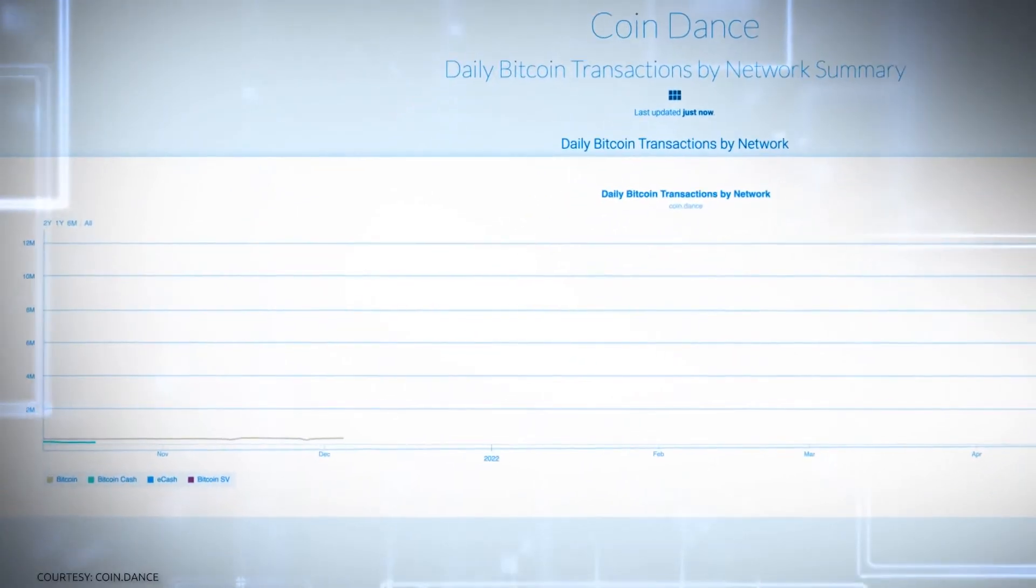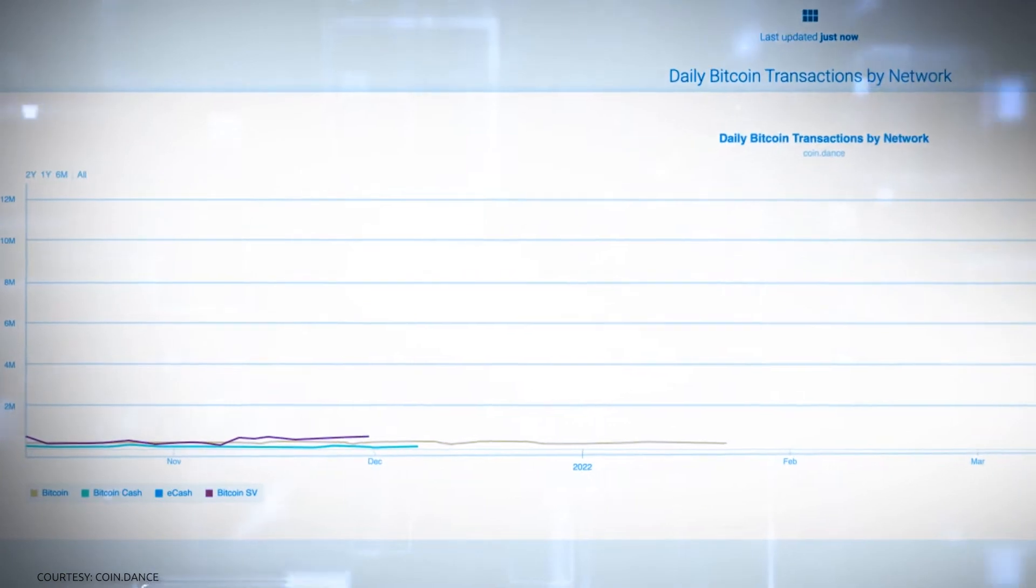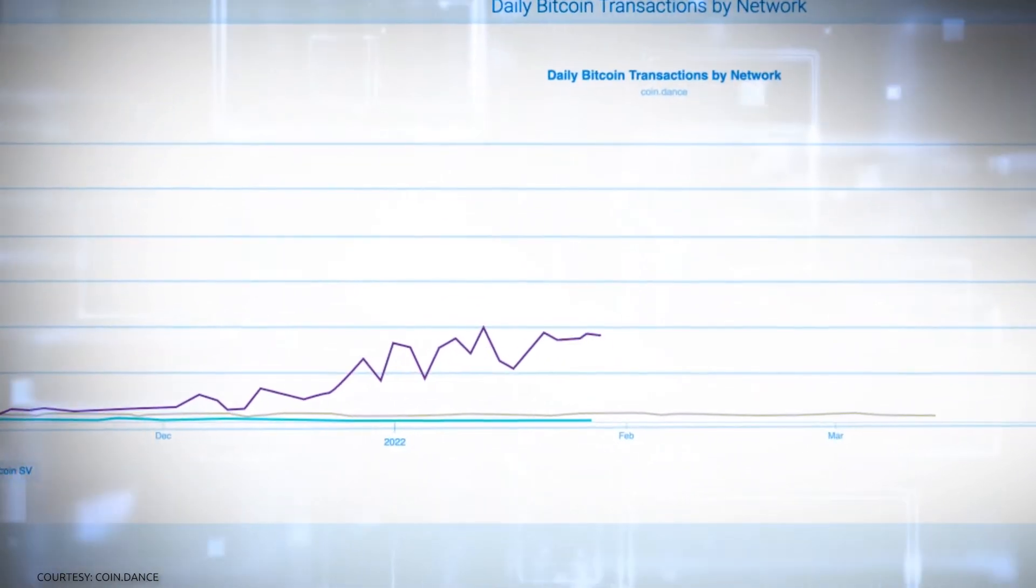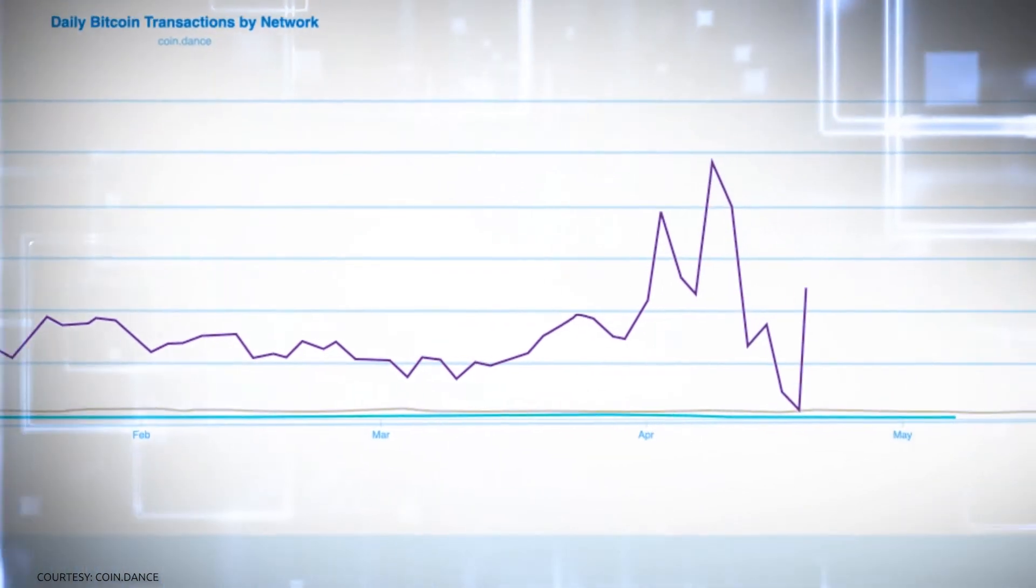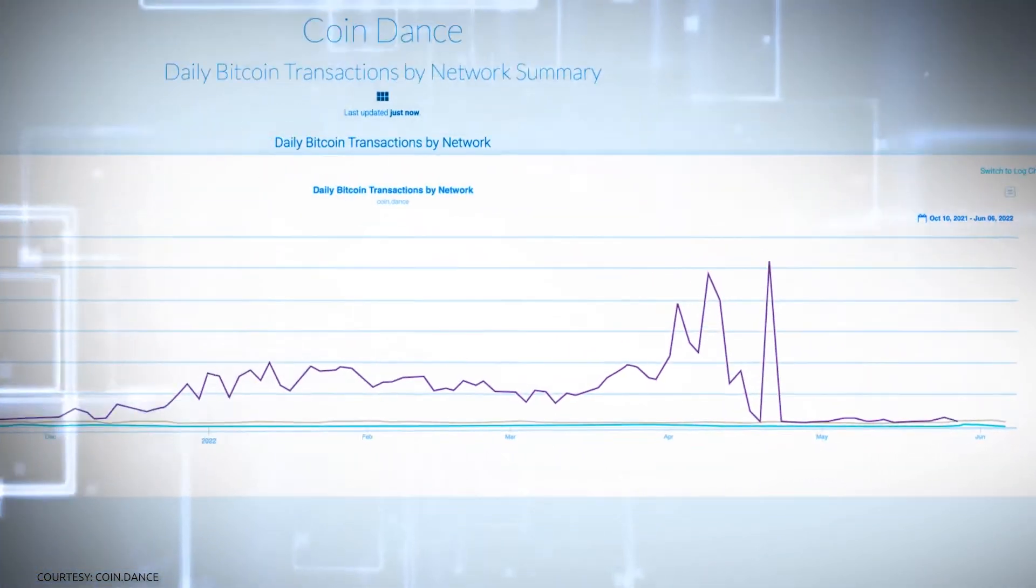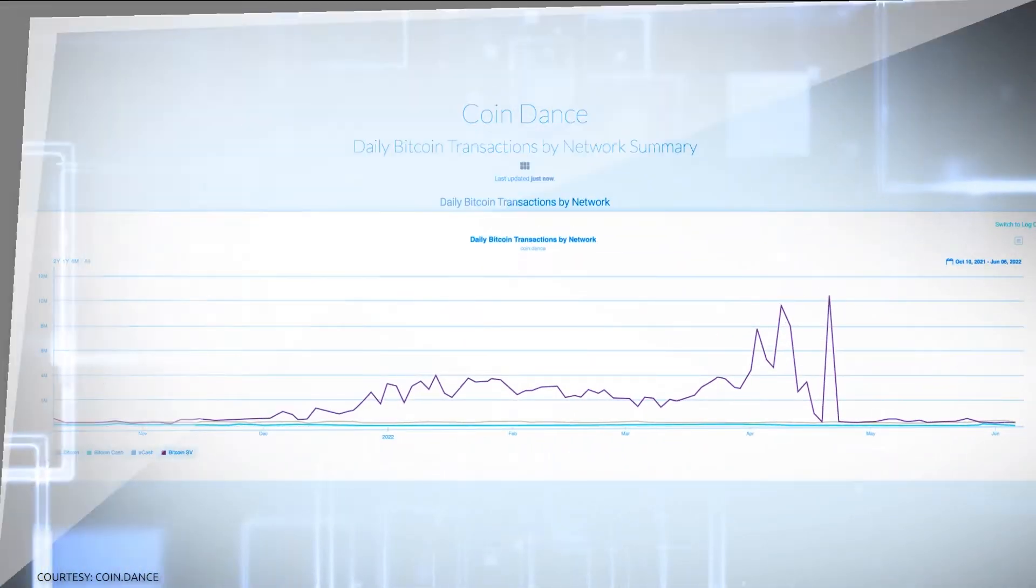Since the inception of the Bitcoin Satoshi Vision Node client, there has been a laser-like focus on the network's ability to manage demand that has exploded by orders of magnitude since early 2019.